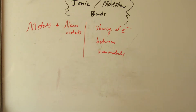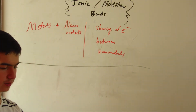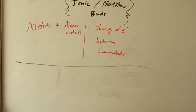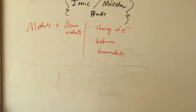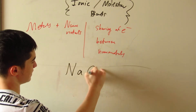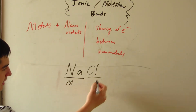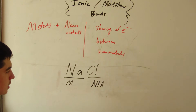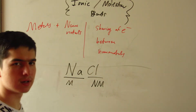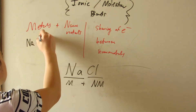Let's look at the difference between ionic and molecular bonds with examples. Take an ionic compound — table salt, NaCl. Let's break it down: Na is a metal, Cl is a nonmetal. So is that covalent or ionic? It's ionic, because we have a metal bonding with a nonmetal. So NaCl is an example of an ionic compound.